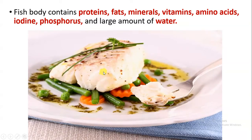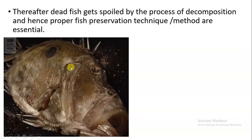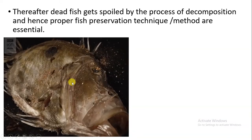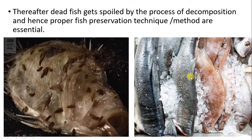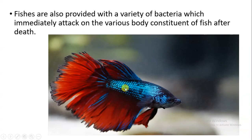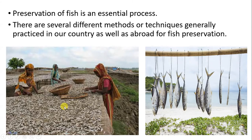Fish contains proteins, fats, minerals, vitamins, amino acids, iodine, phosphorus, and also a large amount of water. When a fish dies, decomposition of its body starts because of bacteria. That is why fish preservation is important. There are a number of techniques and methods by which fish preservation can take place. In fish, there are a number of varieties of bacteria present, so as the fish dies, all the bacteria immediately attack the body and decomposition takes place.